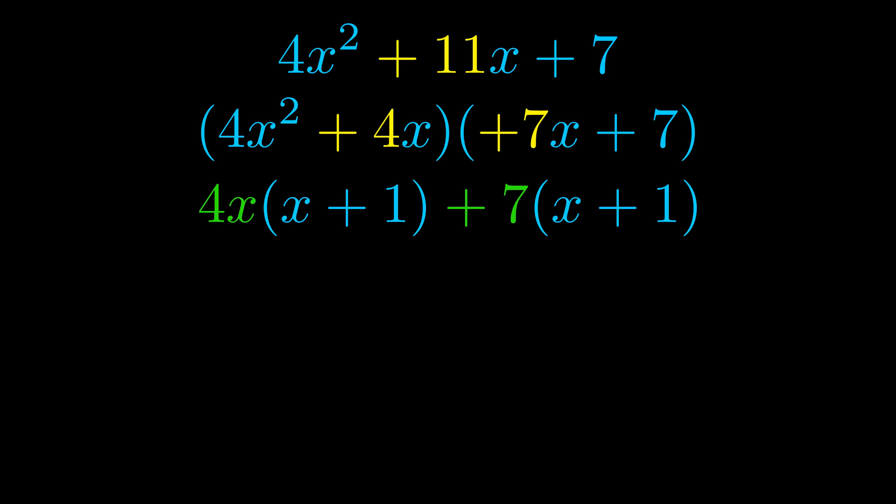Notice also how what remains inside of the parentheses is the same in both cases. The blue values are the same. Those blue values will become one of our factors and we will combine the two green values the GCFs that we pulled out to get the other one. And that is our fully factored equation.